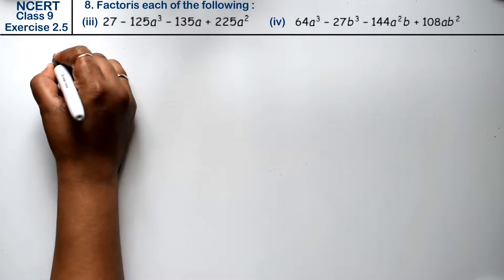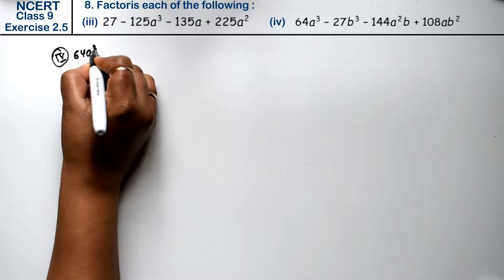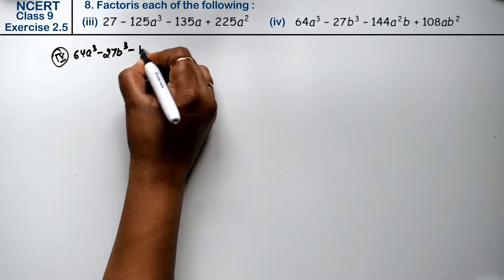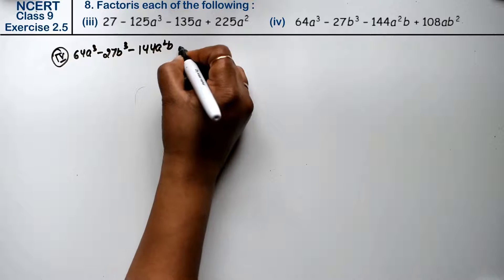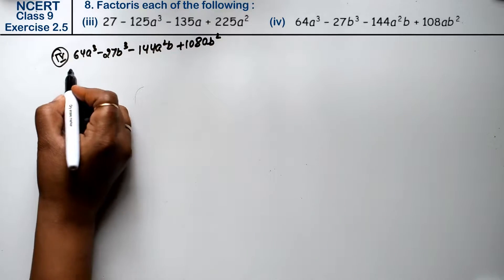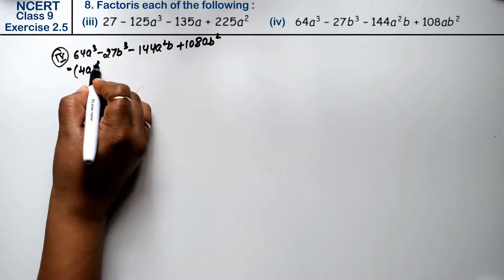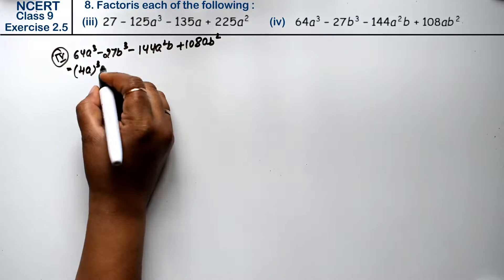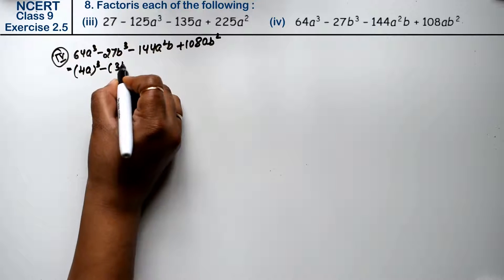Let's do the fourth part. Fourth part is: 64a cube minus 27b cube minus 144a square b plus 108ab square. This is (4a) cube — because 4 into 4 is 16 and 4 cubed is 64. This is (3b) cube.